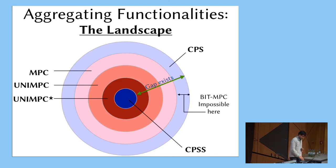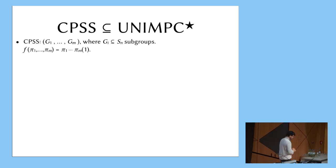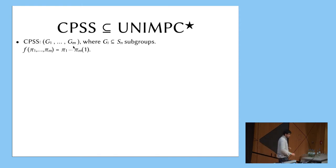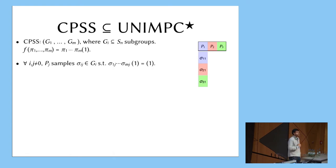Now let me tell you about CPSS and why it's inside UNIMPC*. We're going to give a UNIMPC* protocol that generalizes a very natural and simple protocol for summation. Suppose your function is defined in terms of M subgroups of SN, and suppose there are three parties (M=3). Before getting their input, they are going to talk to each other a little bit. Each party — P1 in this case — picks three elements in the groups G1, G2, and G3, each colored differently because they are coming from different sets X1, X2, X3. They're picked randomly subject to the condition that 1 is a fixed point of their composition.